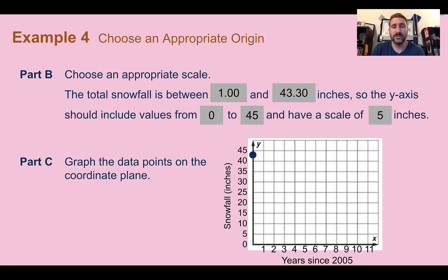Now I can plot my data points. So in the year 2005, which is year 0, there were about 43 inches of snow. In 2006, year 1, there was about 8 inches of snow. 2007, year 2, there was only about 1 inch. Year 3 in 2008, about 8 again. As I keep going, I can plot the rest.